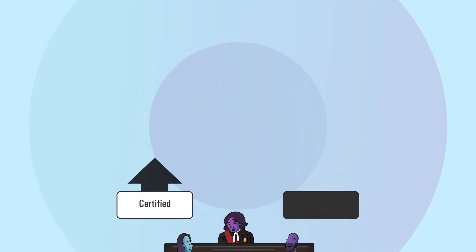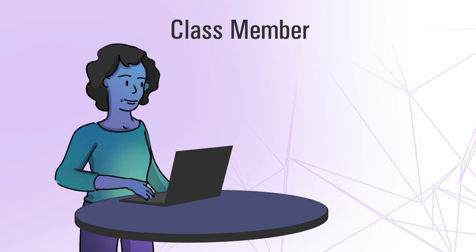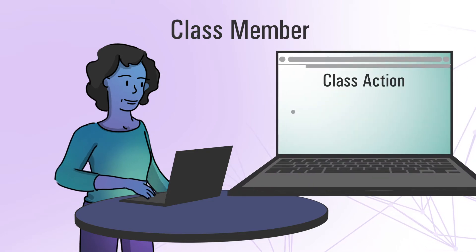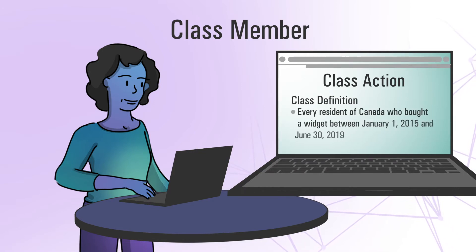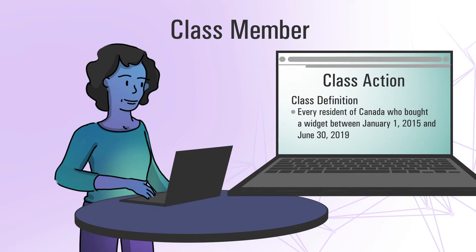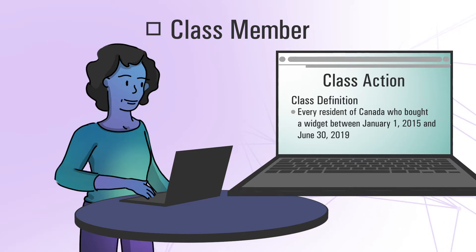The court will order that an official notice of certification be published or sent to class members. Anita goes to the class action website and sees that a court has certified the class action and has defined the class as every resident of Canada who bought a widget between January 1, 2015 and June 30, 2019. Because Anita bought widgets during that time period, she is automatically a member of the class.